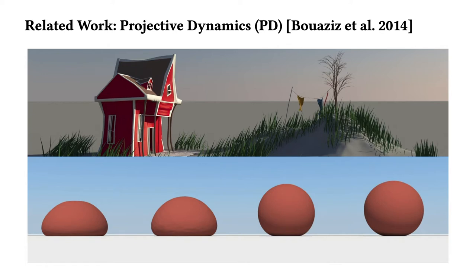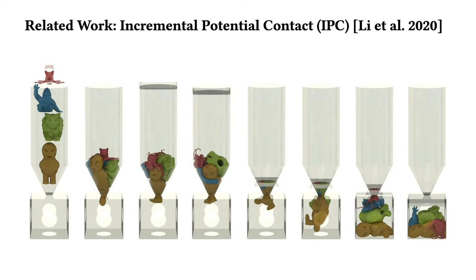Projective dynamics resolves deformation and contact based on constrained projections. It's efficient but not robust for complex contacts. Recently, researchers proposed incremental potential contact. IPC uses a barrier method to robustly handle the contact of non-linear elastic solids with guaranteed non-interpenetration. However, their Newton solver is expensive due to high costing in every iteration.